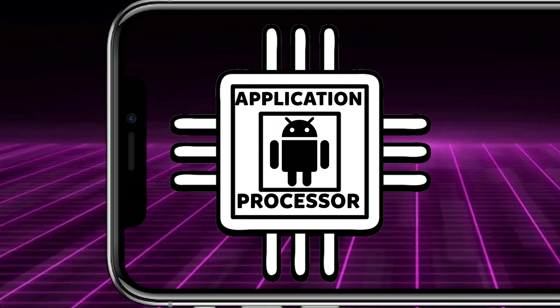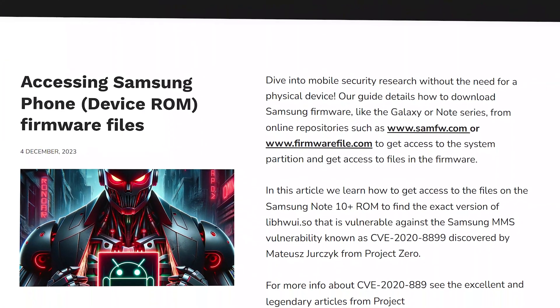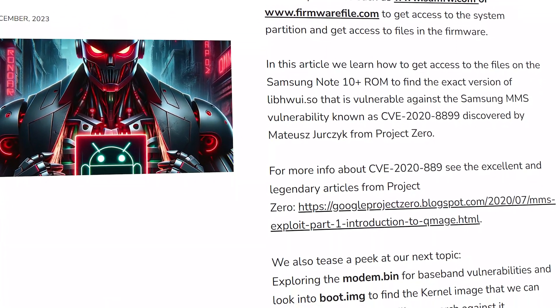The application processor runs the operating system like iOS or Android, and as we know, this is quite secure. On the other side, we have a separate system for the baseband — you can actually get the modem.bin, the code flashed on the chip, for investigation. All those security features on the application processor side — like ASLR, data execution prevention, NX non-writable pages — are not available on the baseband. This makes exploiting baseband vulnerabilities super easy — like it's 1990.